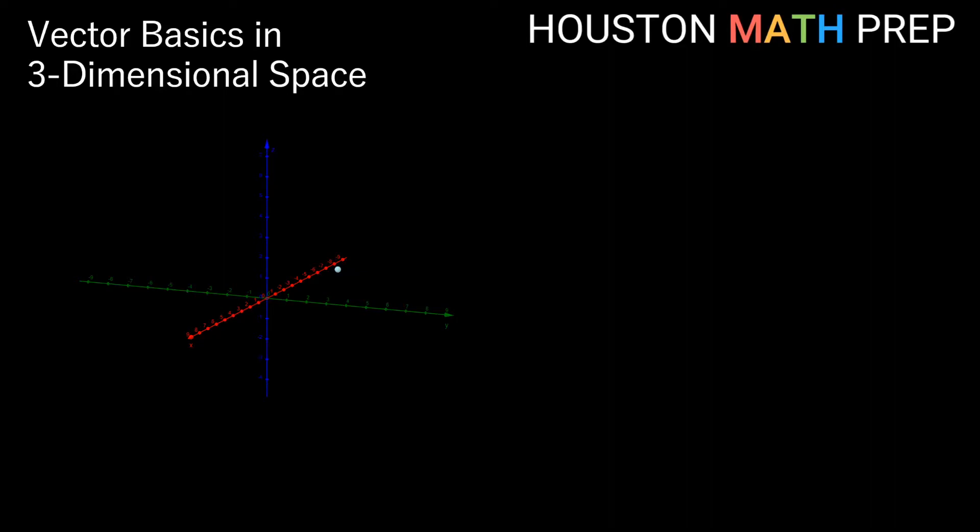Welcome back everyone, Houston Math Prep here, and here I've got a point plotted in 3D space. If I start from the origin and I count one unit in the x direction, and four units in the y direction, and two units in the z direction going up, I arrive at my point.